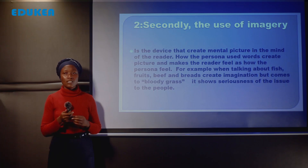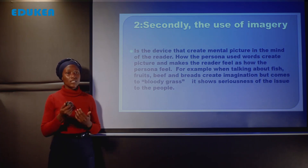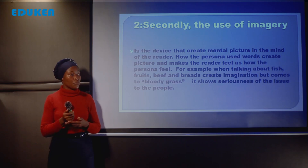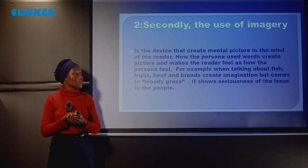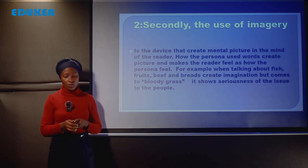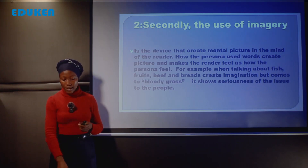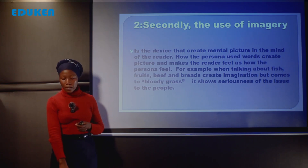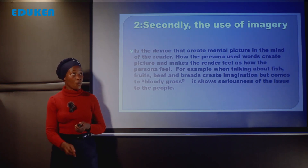When talking about fish, fruits, beef, and grapes, it creates imagination — but what the people know is only blood grass. It shows the seriousness of the issue. The people are not happy with the situation they face. They see that these leaders are hypocrites because they cannot afford these things — what they know is blood grass.